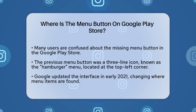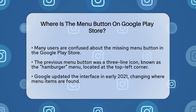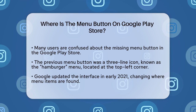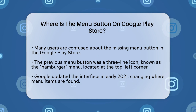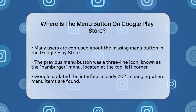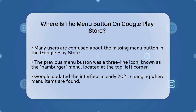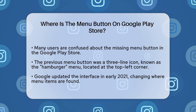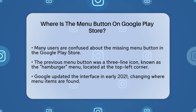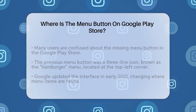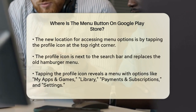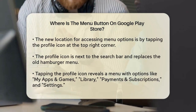In the past, the menu button was easily identifiable as a three-line icon, often called the hamburger menu, located in the top left corner of the Play Store. However, Google made some changes to the interface that might have left you wondering where everything went.